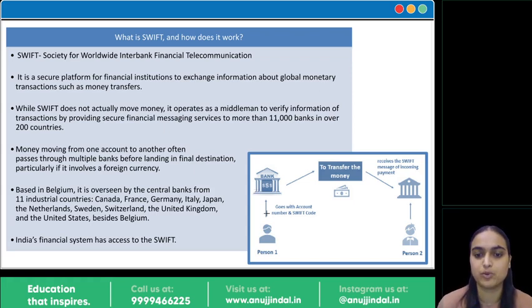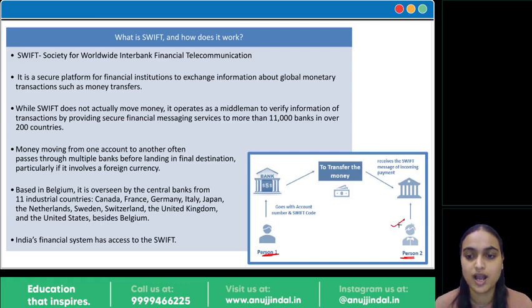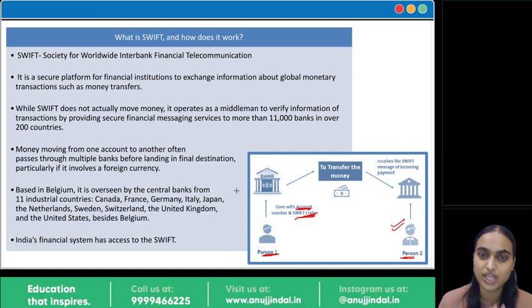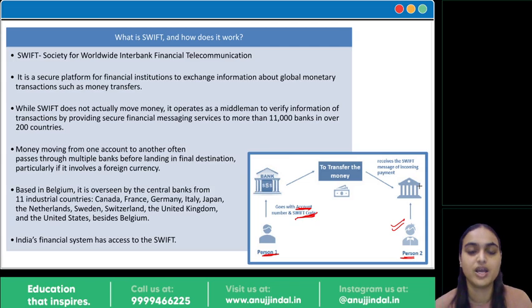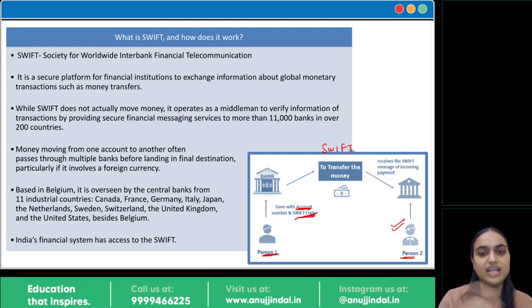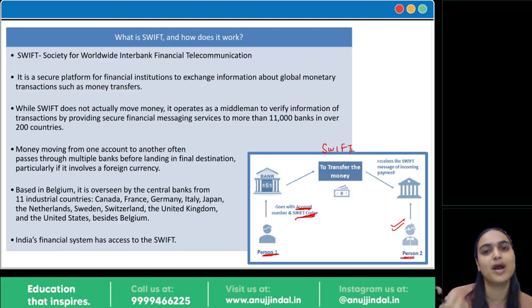A person wanting to send money to another country needs a SWIFT code — a code assigned to a bank account. You provide the account details and SWIFT code to your bank. The US bank then sends a message to SBI in India that a certain amount is to be transferred. The transaction involves currency conversion, and once all approvals are given, the money is deducted from Bank of America and added to the parents' account in SBI India.